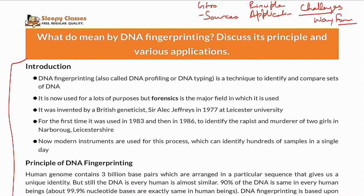So this is our basic structure. Introduction: DNA Fingerprinting, also known as DNA Profiling or DNA Typing, is a technique used to identify and compare sets of DNA. If we have two different samples, we can see through DNA Fingerprinting whether they belong to one person or two different people. Its present usage is prominently in forensics, where it has emerged as a major field.